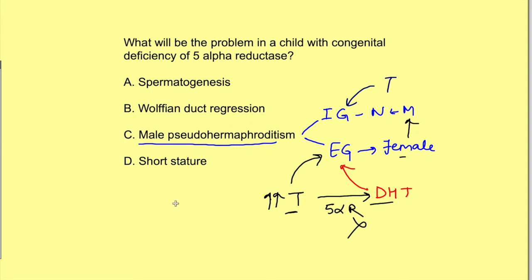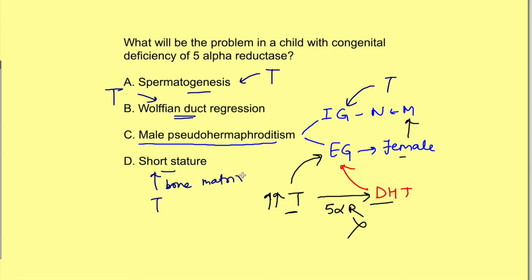The other options will not occur: spermatogenesis — testosterone is directly responsible for spermatogenesis, so it is unaffected. Wolffian duct regression will not occur because testosterone in its direct form causes development of the male internal genitals. Short stature will also not occur because the protein anabolic effect causing increased growth is again directly by testosterone.